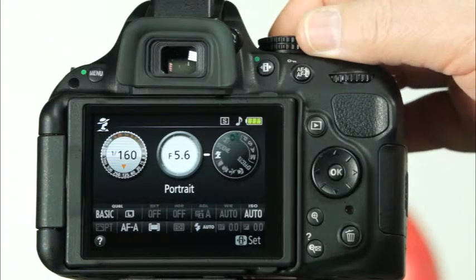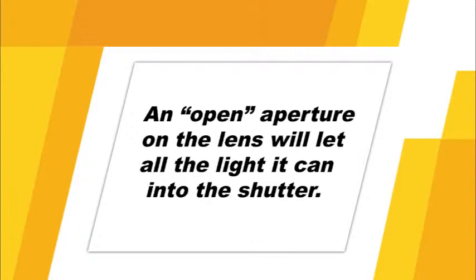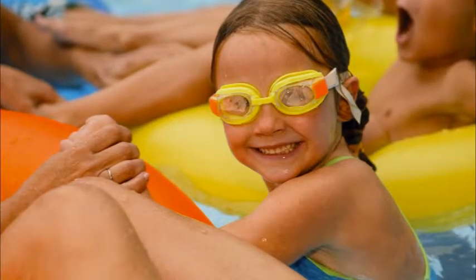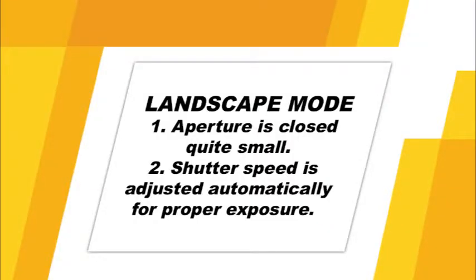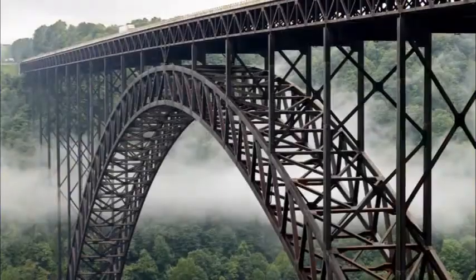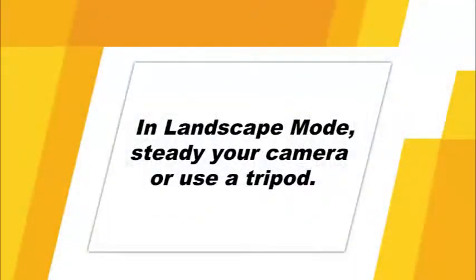The next scene mode option on the mode dial is portrait mode. Use this mode when you want the subject to be in focus and what is behind the subject to have a soft focus. In portrait mode, the aperture is set wide open, letting all the light it can into the shutter. With a wide aperture, you'll get a shallow depth of field. The next mode is landscape mode. In this mode, the aperture will have a very narrow opening, creating a very long depth of field. The camera will then adjust the shutter speed to get the proper exposure. This mode will give your photo a sharp focus in both the foreground and the background. With the landscape mode, the shutter speed can get pretty slow, so be sure to steady your camera or use a tripod to avoid camera shake.